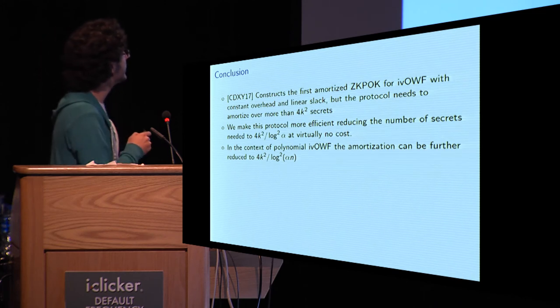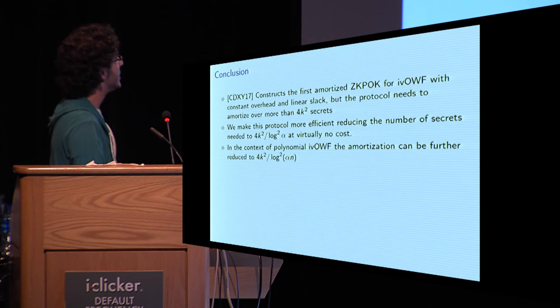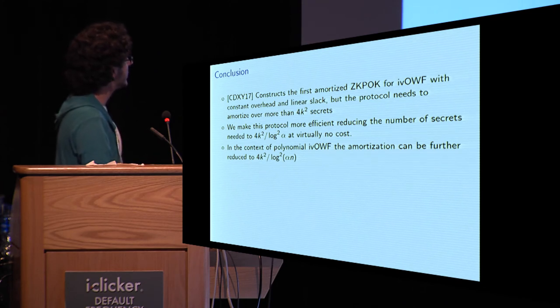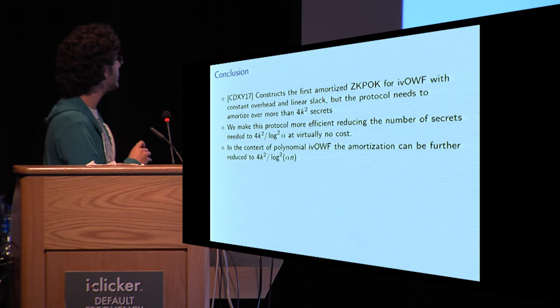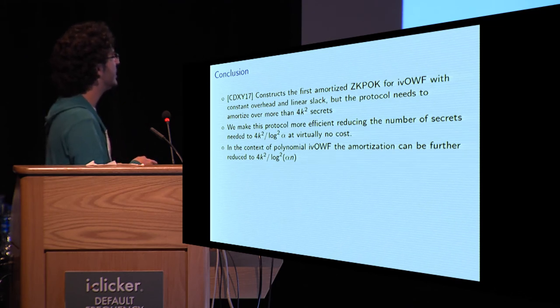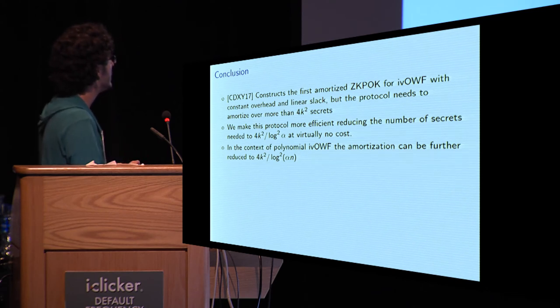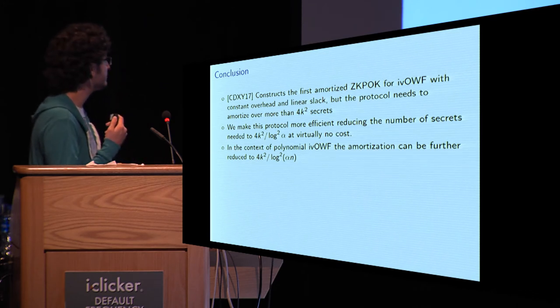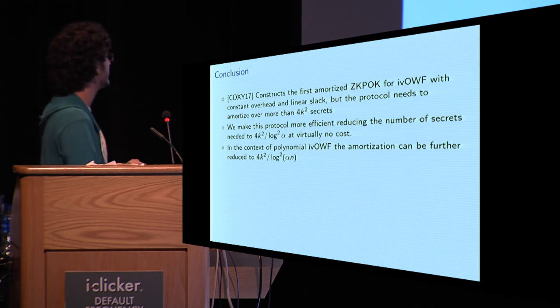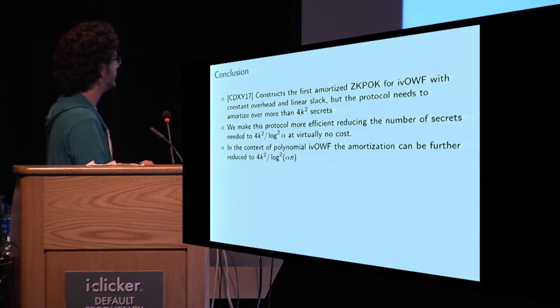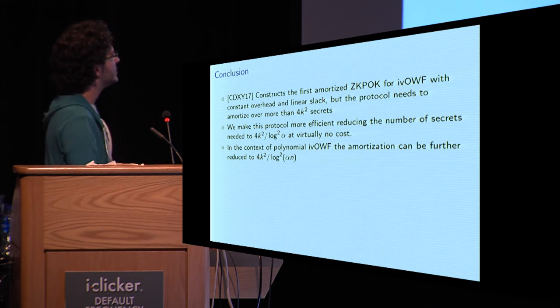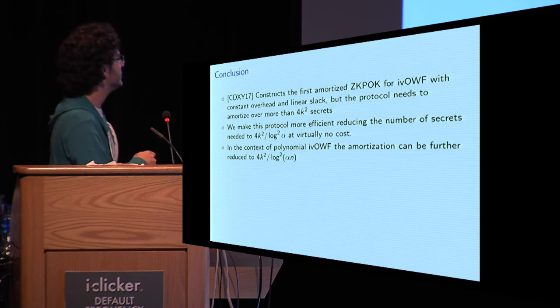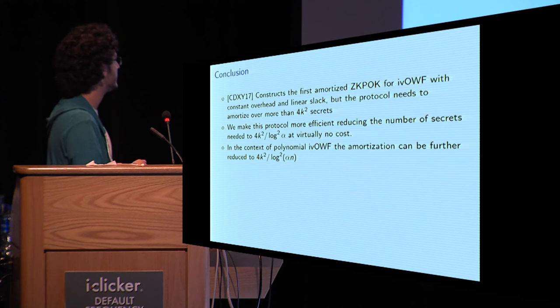In conclusion, the work of Kramer et al constructs an amortized zero-knowledge proof of knowledge for integer vector one-way function with constant overhead and linear slack. This was a huge improvement upon prior works. But the amortization is really large. The number of vectors needed for amortization was quite large. We reduce this number to 4k squared divided by log squared alpha for any parameter alpha. And we can even further reduce this number of equations to 4k squared divided by log squared alpha n in the case of polynomial invertible one-way functions. Well, I will not go into details here, but the zero-knowledge proof is somewhat weaker in this context.